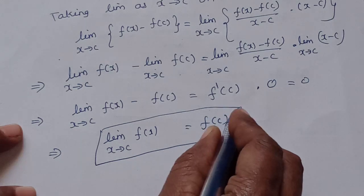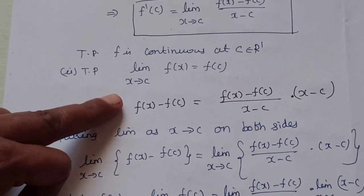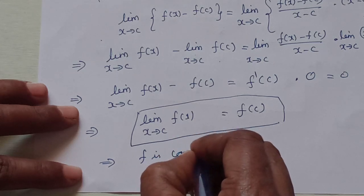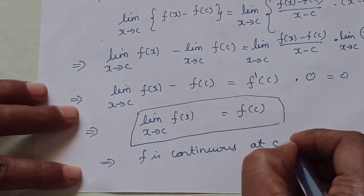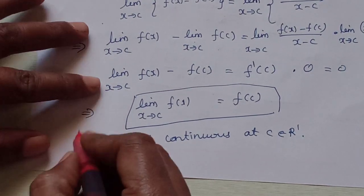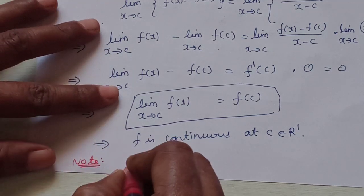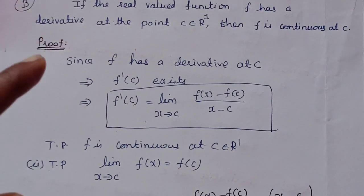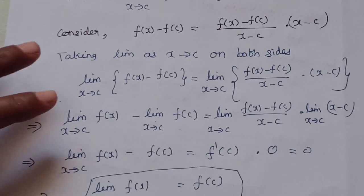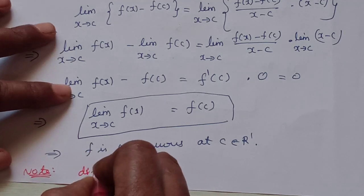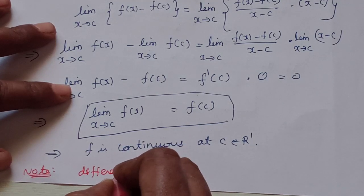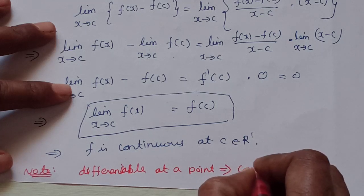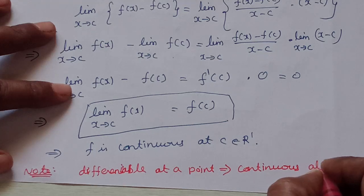So the left-hand side, which is the limit as x tends to c of f(x) minus f(c), equals 0. This gives us the limit as x tends to c of f(x) equals f(c), which by definition means f is continuous at c. Therefore, f is continuous at c, c belonging to R1. This proves that differentiable at a point implies continuous at that point.